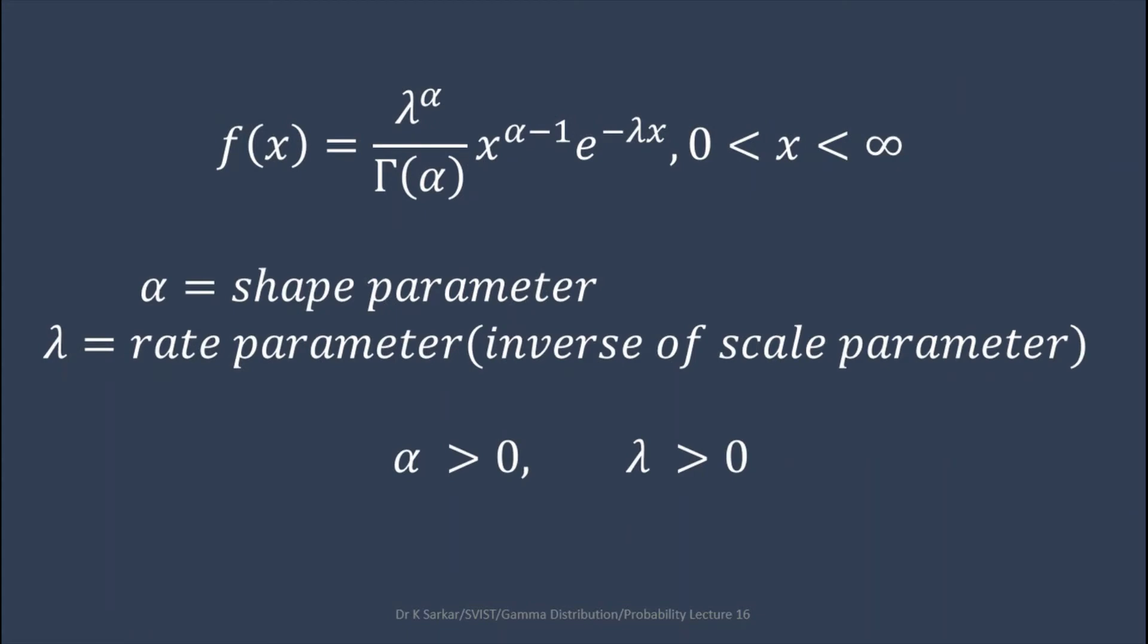In gamma distribution PDF, alpha is called the shape parameter and lambda is called the rate parameter, which is the inverse of the scale parameter.